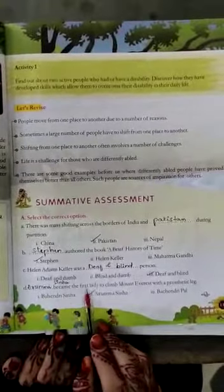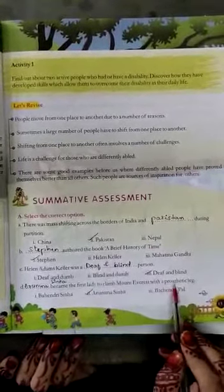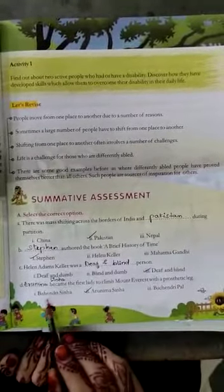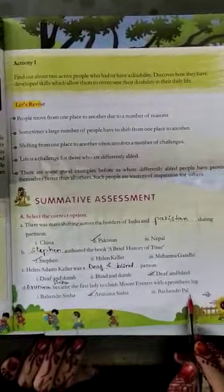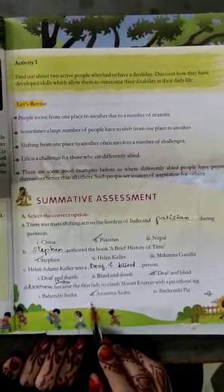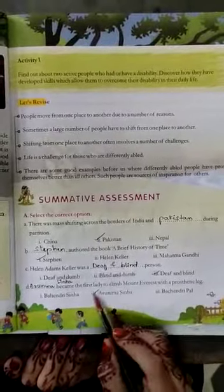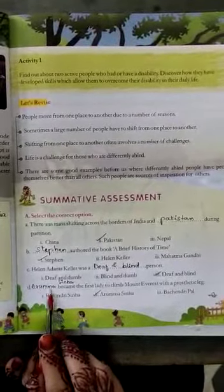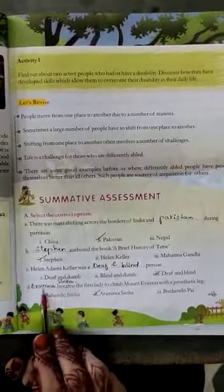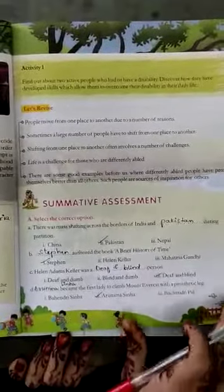See D: 'Dash became the first lady to climb Mount Everest with a prosthetic leg.' Options: first, Behendri Sinha; second, Arunima Sinha; third, Bachendri Pal. Which one is correct, children? As we learned in our lesson, obviously it is Arunima Sinha. You have to write: A-R-U-N-I-M-A Arunima S-I-N-H-A Sinha. We have completed page number 13.